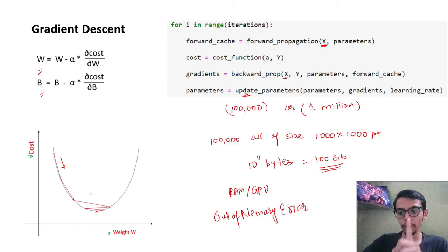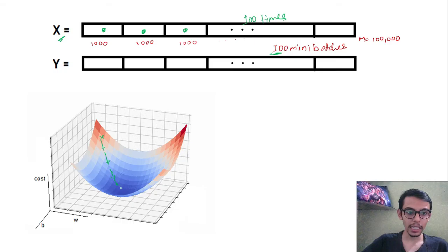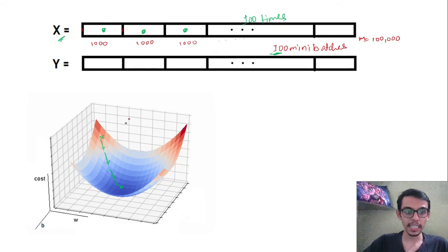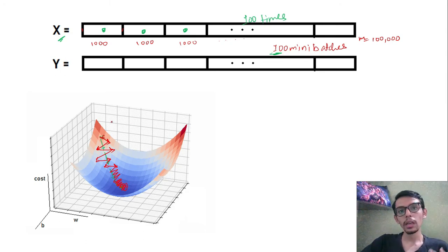We know that the graph of cost versus w parameter looks like a curve where every step takes us toward the local minimum. If we plot this against two weight parameters, it becomes a three-dimensional surface. With normal gradient descent we converge to the local minimum in clean steps, but with mini batch gradient descent the path goes something like this — then this, then this — taking a zigzag curve until it reaches near the local minimum. It will never reach exactly the local minimum but will oscillate around that region. This zigzag path is called noise.